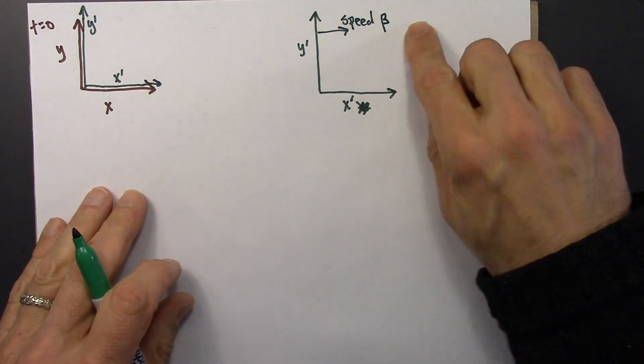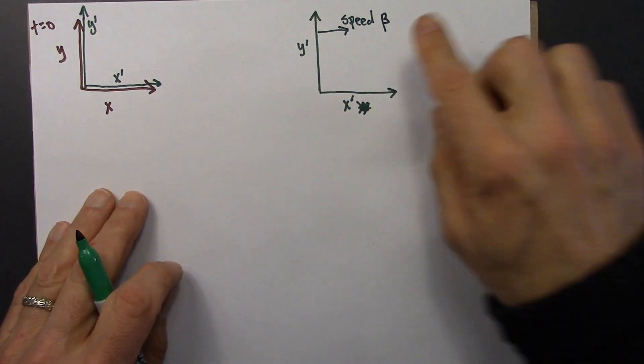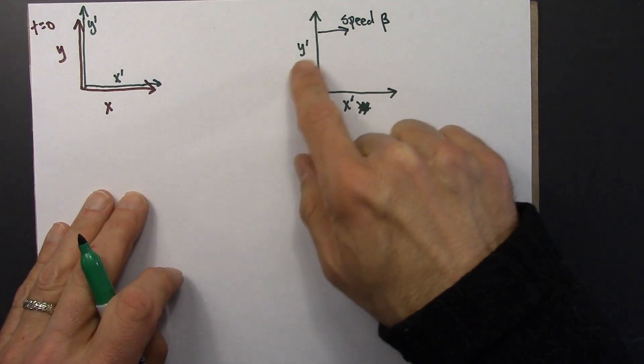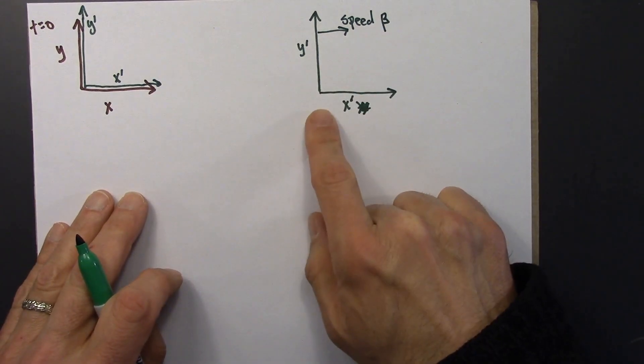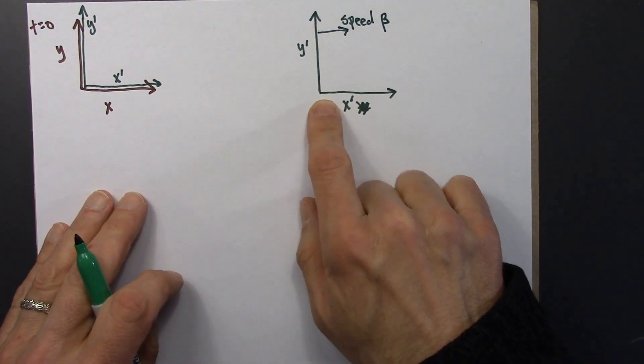Beta is a Greek letter. We use it all the time in this course to refer to the speed at which the moving reference frame is moving, how fast Beowulf is moving.